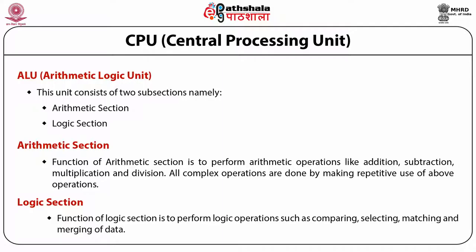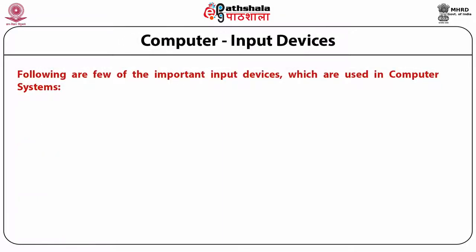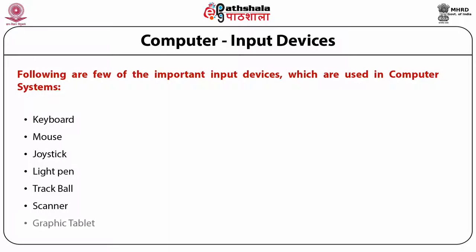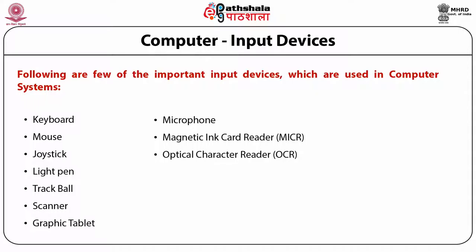The following are the other important input devices which may be used in the computer system: keyboard, mouse, joystick, light pen, track ball, scanner, graphic tablet, microphone, magnetic ink card reader or MICR — we have seen the MICR checks — OCR that is optical character reader, barcode reader and optical mark reader.